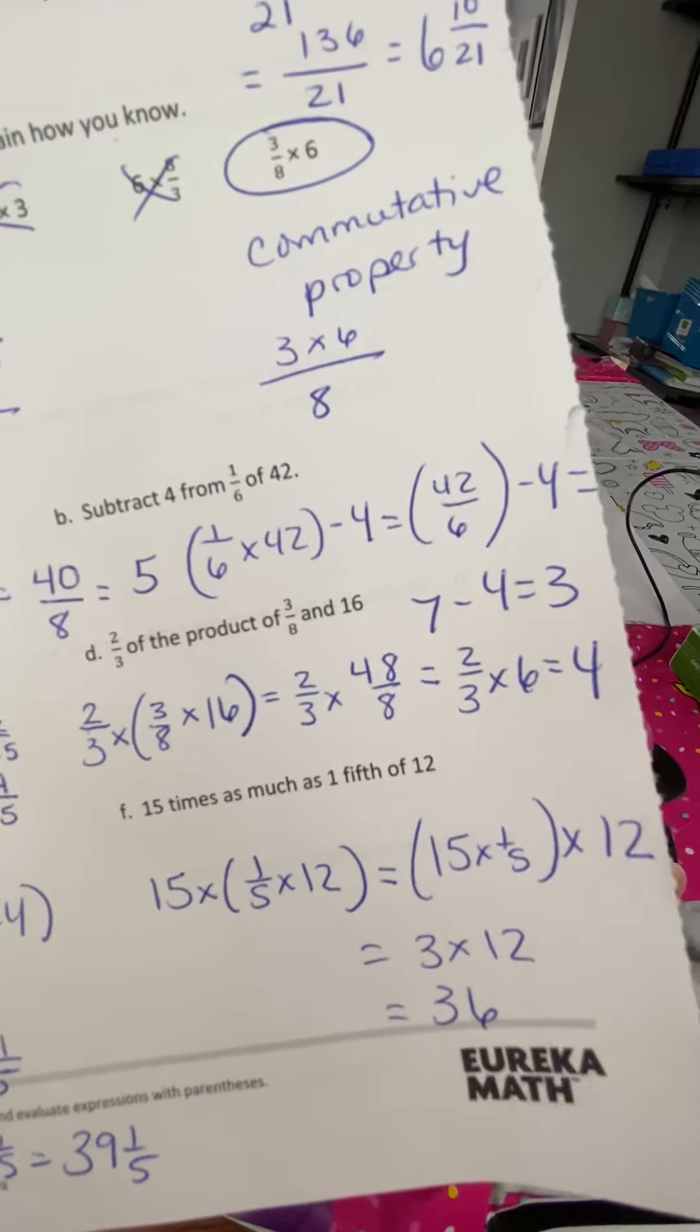F, 15 times as much as 1 fifth of 12. What is 1 fifth of 12? We're going to actually regroup the 15 times 1 fifth and then multiply that by 12 because it makes it a little bit easier because 15 times 1 fifth is 3 and 3 times 12 is 36.